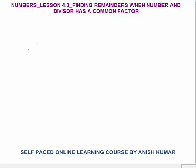Now for example, I am taking the case where you want to divide 180 by 14. Now what is the common factor? The common factor is 2. So 180 is 2 into 90, and 14 is 2 into 7.